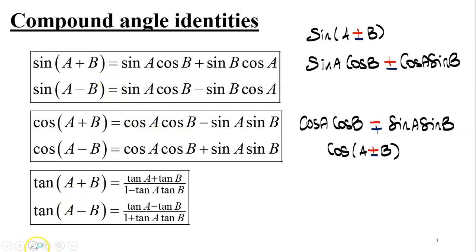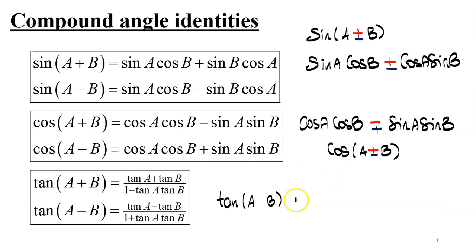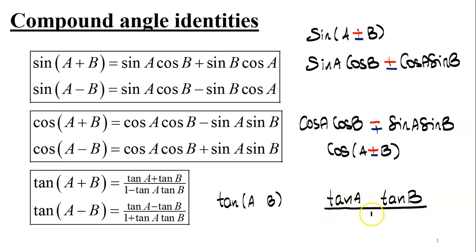For the compound angle identities of tan, the numerator contains tan a and tan b, and the denominator is one and the product of tan a tan b. The signs are distributed according to the sign separating a and b inside tan.